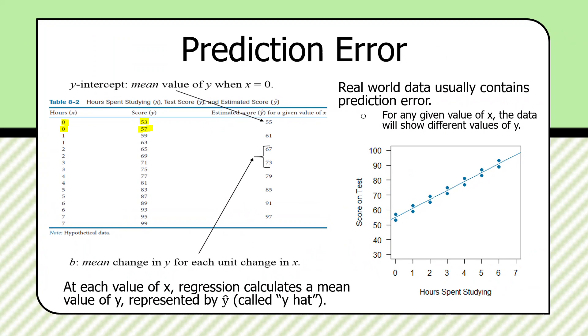Now, here's a more realistic data set. Over here, we have two students, neither of whom studied. One got a 53, the other got a 57 on the test. This difference represents prediction error. What would be the value of y? An estimated value of y for the value of x of zero.